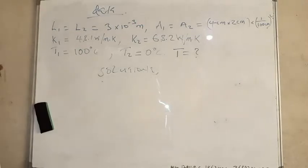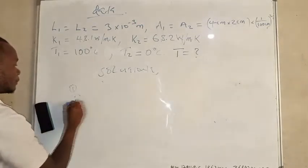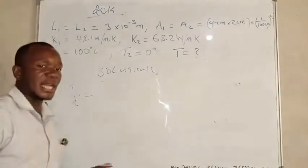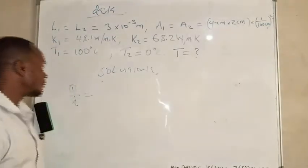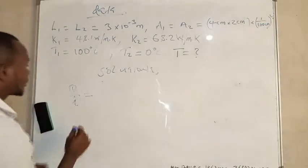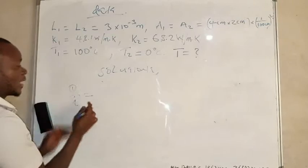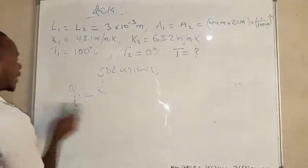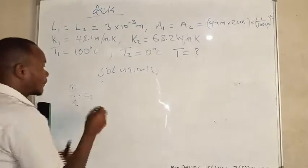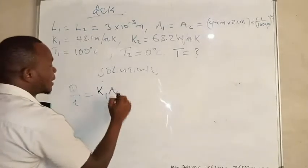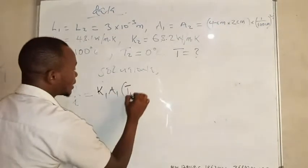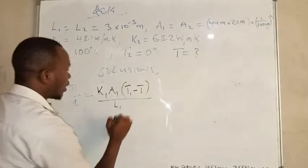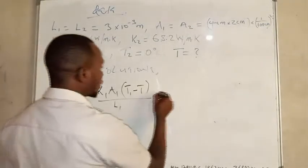The rate at which energy flows is given by Fourier's law. For metal plate 1, the heat rate Q1 is equal to K1 times A1 times the quantity T1 minus T, divided by L1. We call this equation number 1.